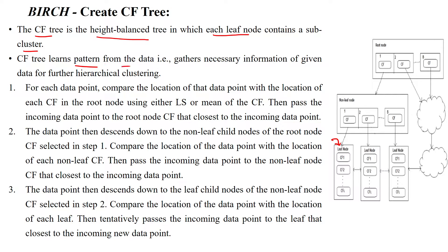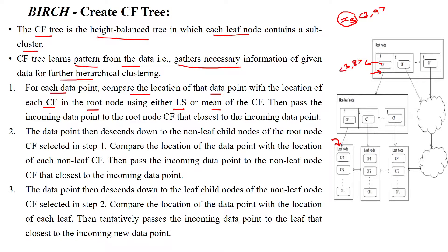Each leaf node contains a subcluster. The CF tree learns the pattern from given data points — it gathers necessary information for further hierarchical clustering. For each data point, compare its location with the location of each cluster feature in the root node using the linear sum or mean. For example, if you are adding data point x3 with linear sum 3,9, and a cluster feature has linear sum 3,8 while another has 5,15, then x3 is closest to 3,8, so it will be combined with that leaf node.